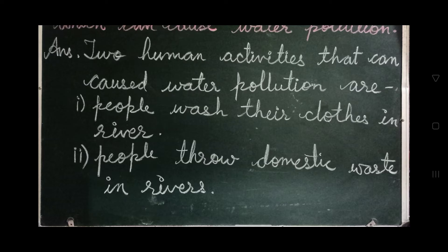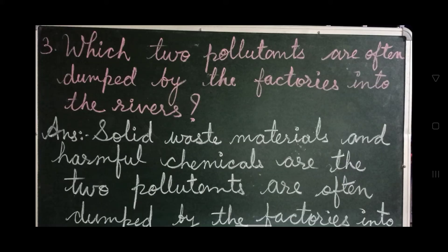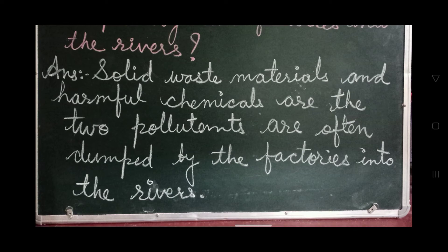Let's come to the next question: Which two pollutants are often dumped by the factories into the river? Pollutants are substances that cause pollution. Answer: Solid waste materials and harmful chemicals are the two pollutants often dumped by the factories into the rivers.